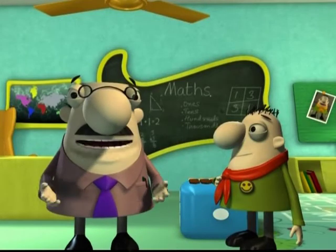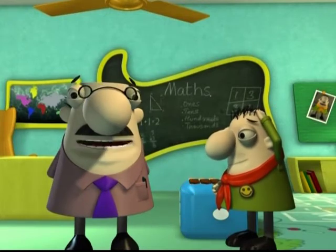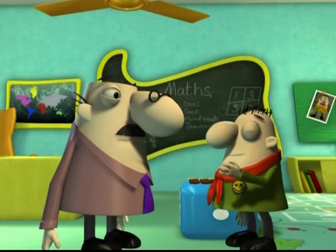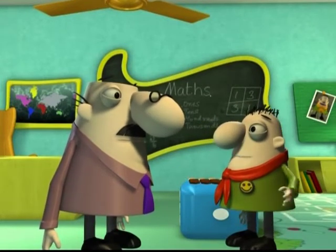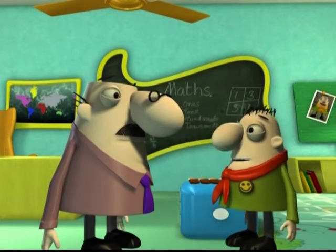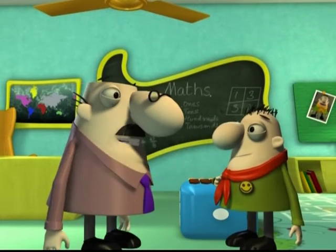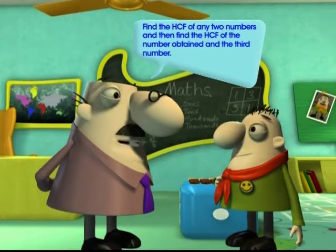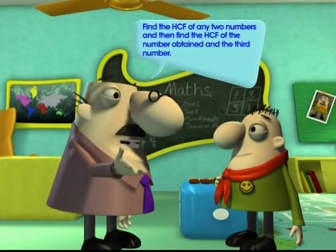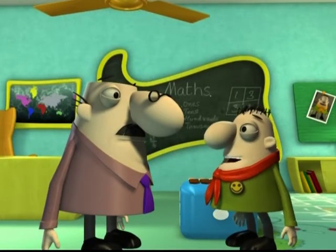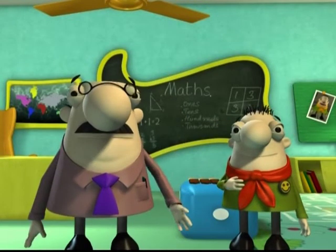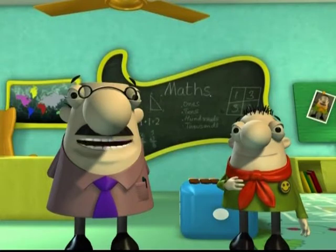So, now I can see that you have understood how to calculate HCF of two-digit numbers. What are you thinking, Kelsey? Professor, now I know how to determine the HCF for two numbers. But I am confused about finding the HCF for more than two numbers. It's pretty simple, Kelsey. First, find the HCF of any two numbers and then find the HCF of the number obtained and the third number. Sounds simple, but I am still not so sure. Then what are we waiting for? Come on, kids. Let's understand it better through Mathemagic.